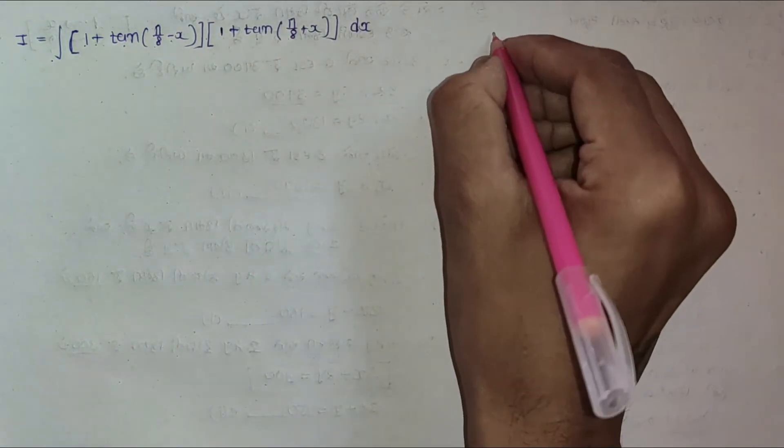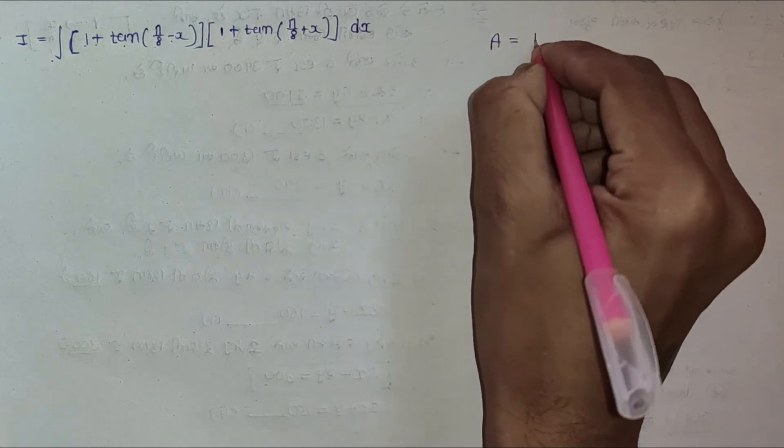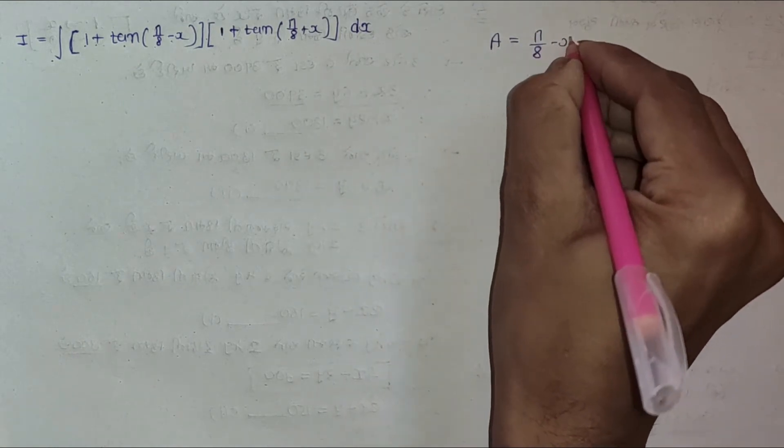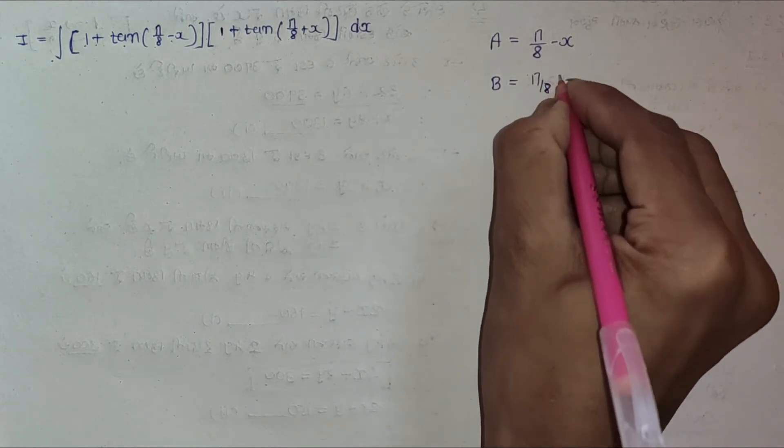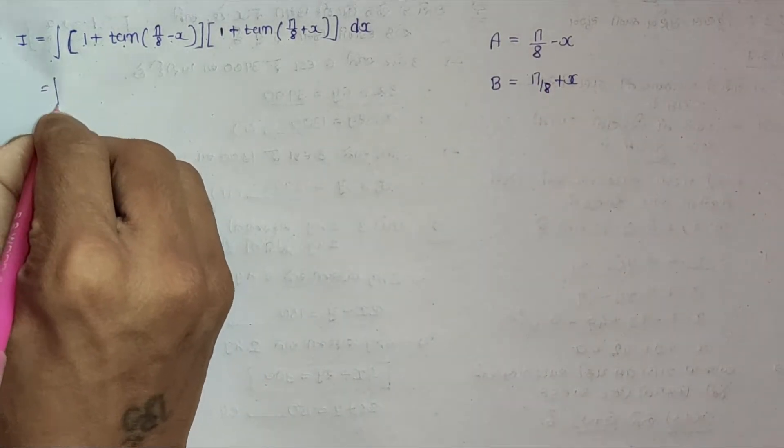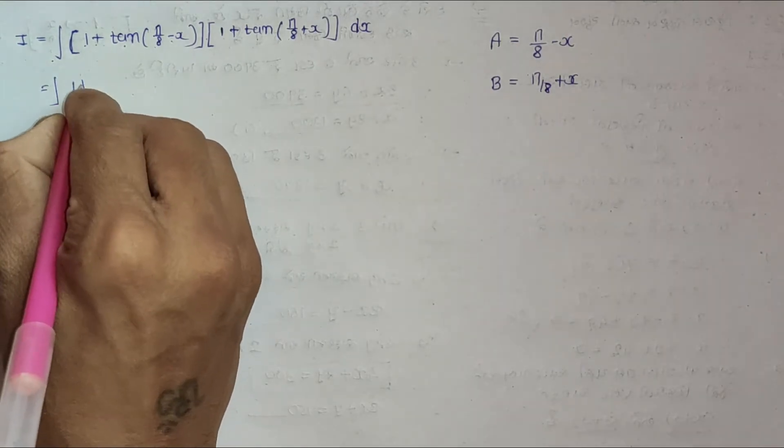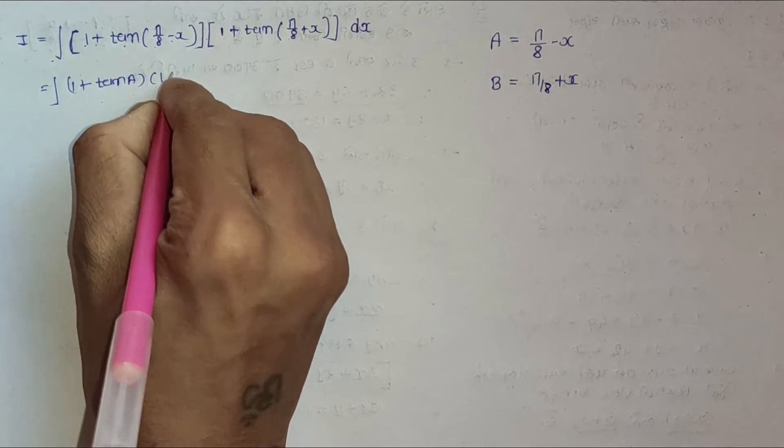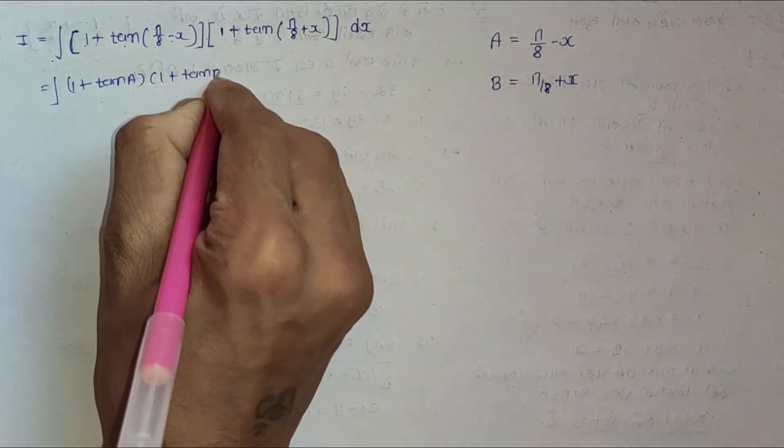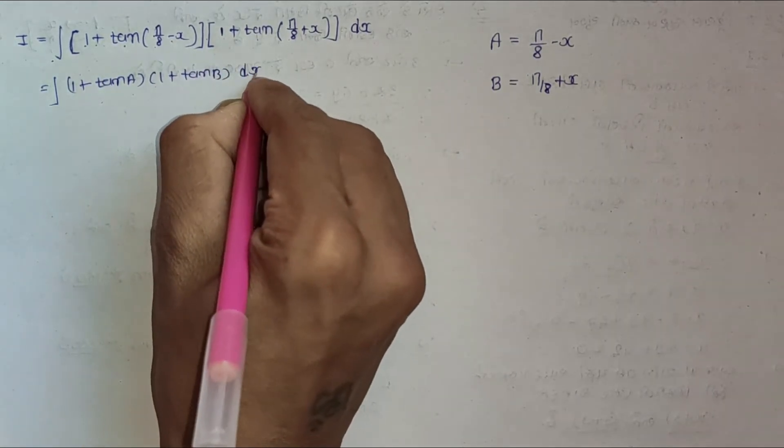If I take angle A equal to π/8 - x and angle B equal to π/8 + x, then the question becomes integration of (1 + tan A)(1 + tan B) dx.